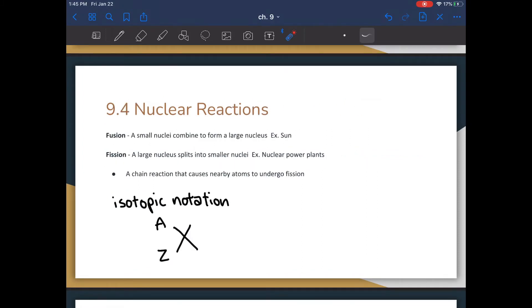Chapter 9.4 covers nuclear reactions, and this is probably the most high-yield section in this entire chapter. There are two kinds of nuclear reactions. The first is fusion, which is when two or more smaller nuclei come together to form a larger nucleus. This is what largely drives the sun, because hydrogen will come together to become helium. The other type is called fission, and fission is when a larger nucleus splits into smaller nuclei, and this is the kind of nuclear reaction used in nuclear power plants. Fission often causes a chain reaction that causes nearby atoms to undergo fission as well.